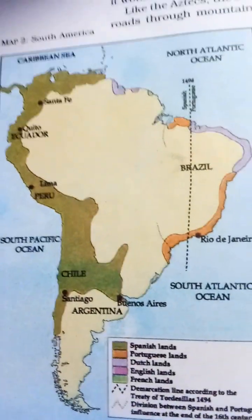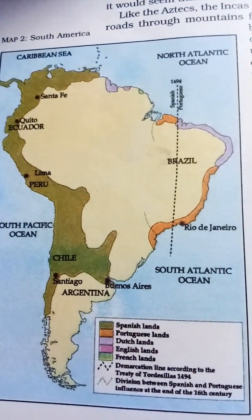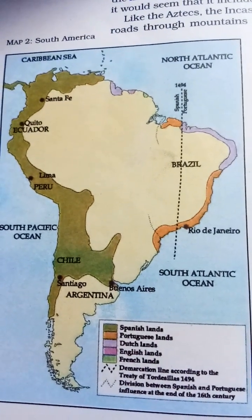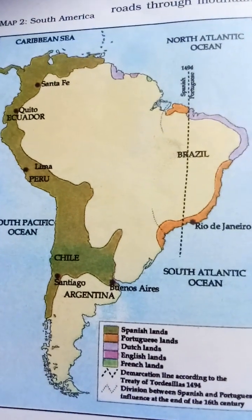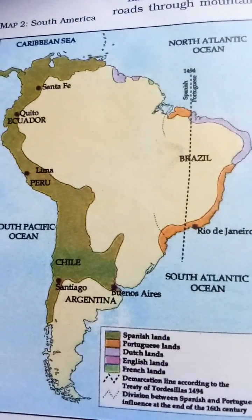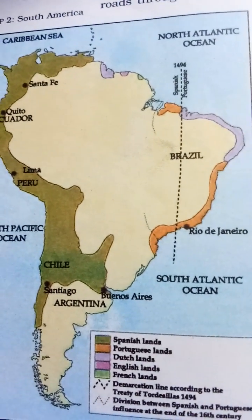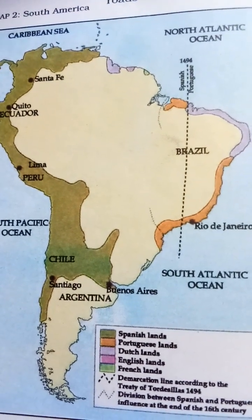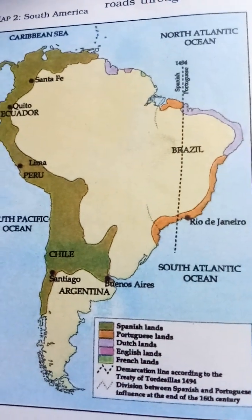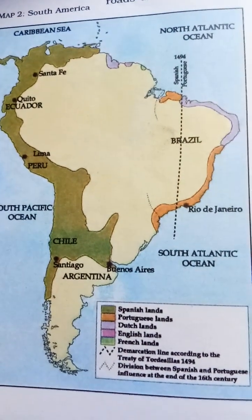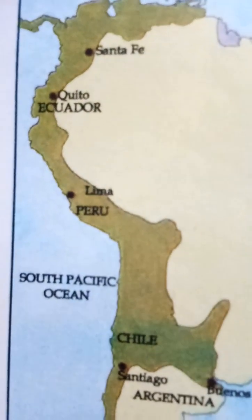The Incas of Peru were the indigenous civilization of South America. In the 12th century, the first Inca, Manco Capac, established the capital at Cusco. Expansion began under Pachacuti, and at its maximum extent the Inca Empire stretched 3,000 miles from Ecuador to Chile.